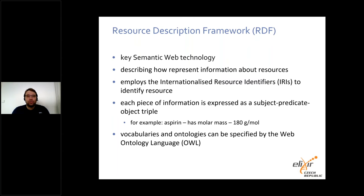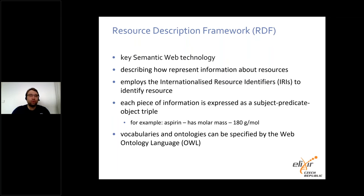The predicates are also identified by these identifiers, which avoids the situation where a certain property name has different meanings in different datasets — which is very important for good interoperability. A set of identifiers used for describing data related to some area of interest is called an RDF vocabulary. These vocabularies and data ontologies are typically described by the Web Ontology Language, which forms another very important semantic web technology.